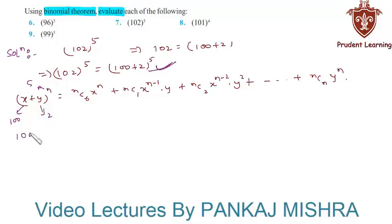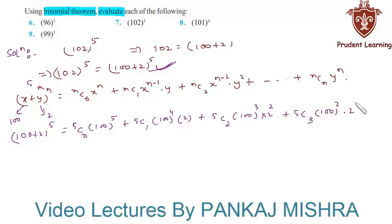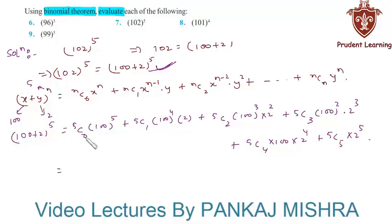So (100 plus 2)⁵ equals 5C0·100⁵ plus 5C1·100⁴·2 plus 5C2·100³·2² plus 5C3·100²·2³ plus 5C4·100·2⁴ plus 5C5·2⁵. This gives us: 5C0 is 1, into 100⁵ which is 10¹⁰.